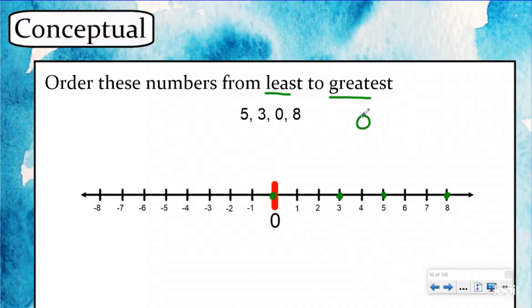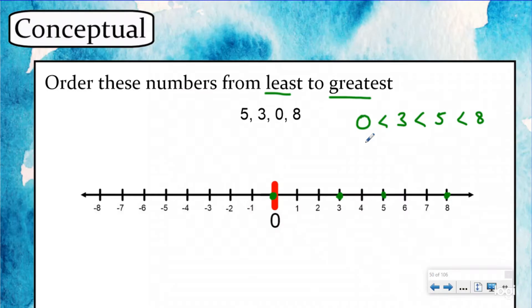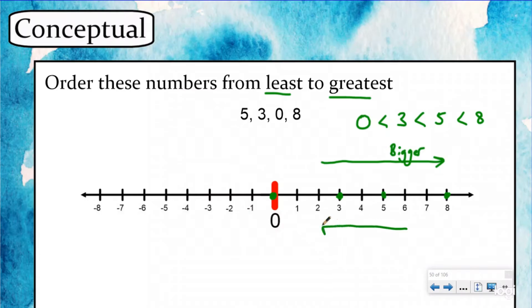I'm going to write this with an inequality statement using my less-than sign. Zero is less than three, which is less than five, which is less than eight. Here's my inequality statement to order these from least to greatest. What I notice on the number line is the smallest one is further to the left and the biggest one is further to the right, because the bigger the number, the further you are away from zero.